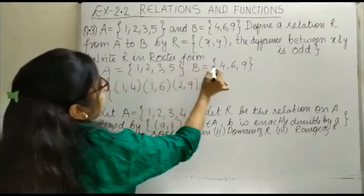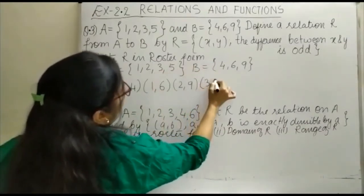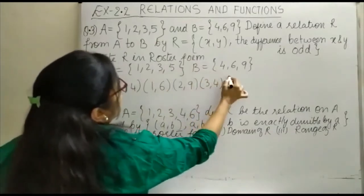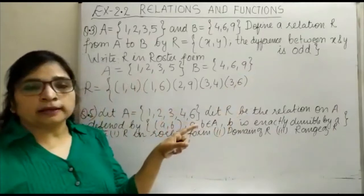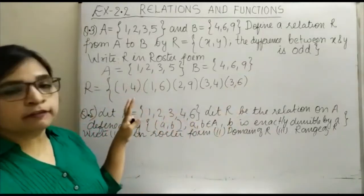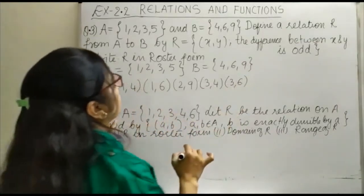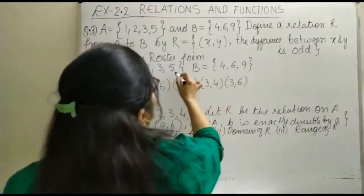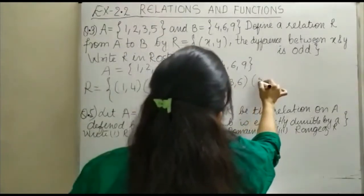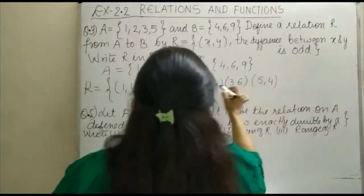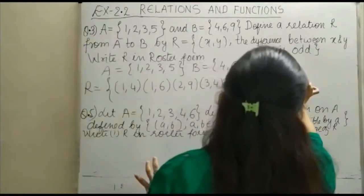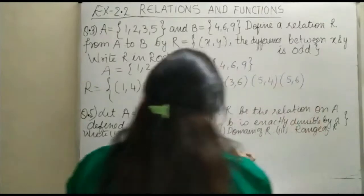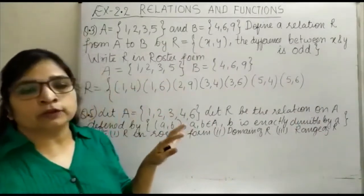(3,4): 3 with 4 will come, 3 with 6 will also come, but 3 with 9 will not come because their difference will be even. Now we move to 5: 5 with 4 will be there, then (5,6) you will have, but you will not have (5,9) because the difference of 5 and 9 will be even.